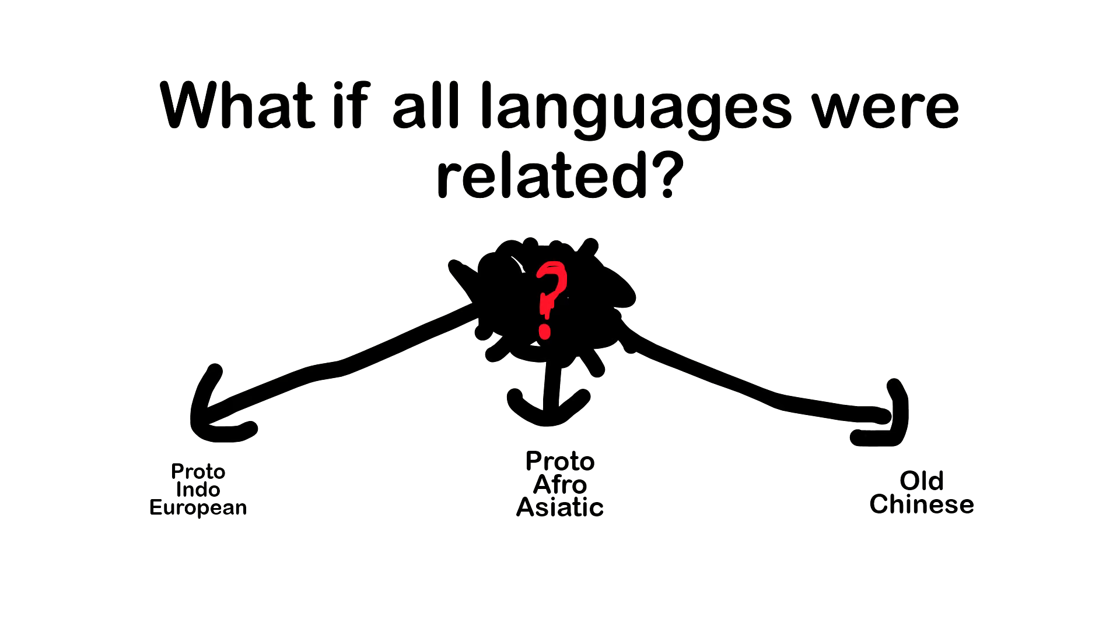Okay, so yeah, this is obviously not all languages, but as you can see, the origins of any family is the Indo-European family as a language, Proto-Afro-Asiatic, and Old Chinese. I can't really find the language origin of Chinese, so I'm just going to do Old Chinese.